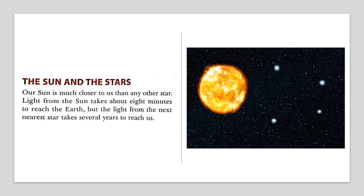The sun and the stars. Our sun is much closer to us than any other star. Light from the sun takes about eight minutes to reach the earth, but the light from the next nearest star takes several years to reach us. So the sun is very close to us compared to other stars, and that's why it looks quite big.